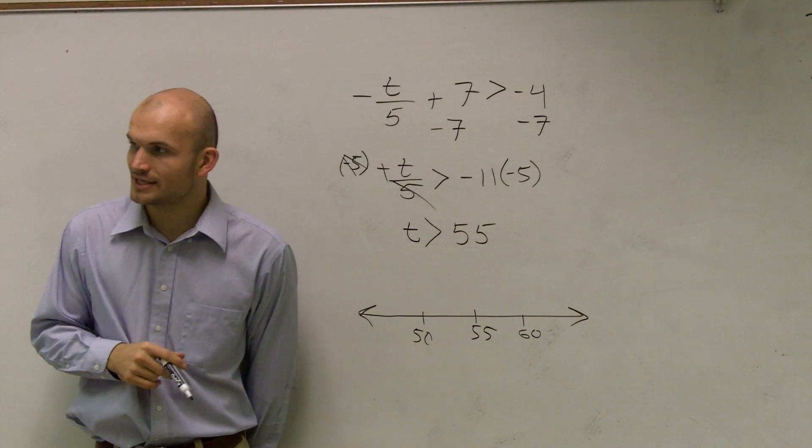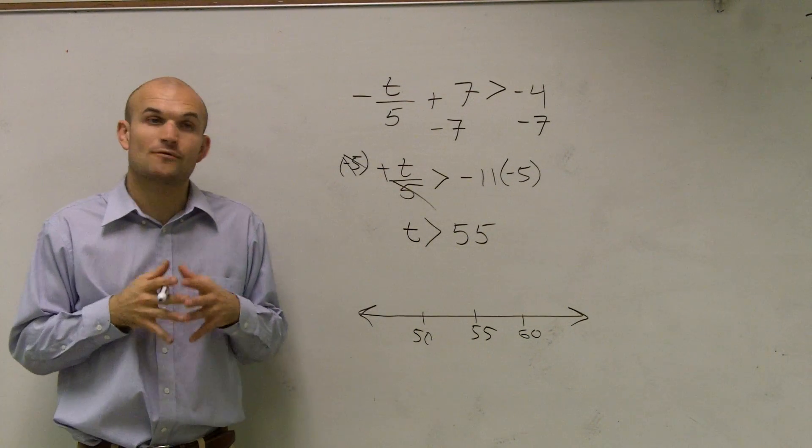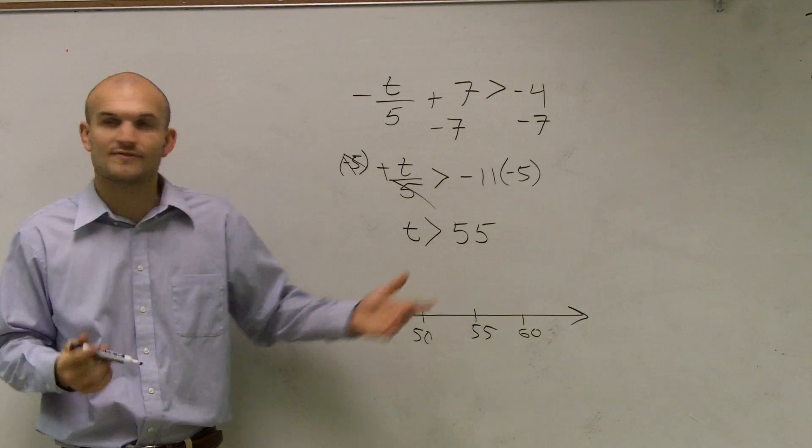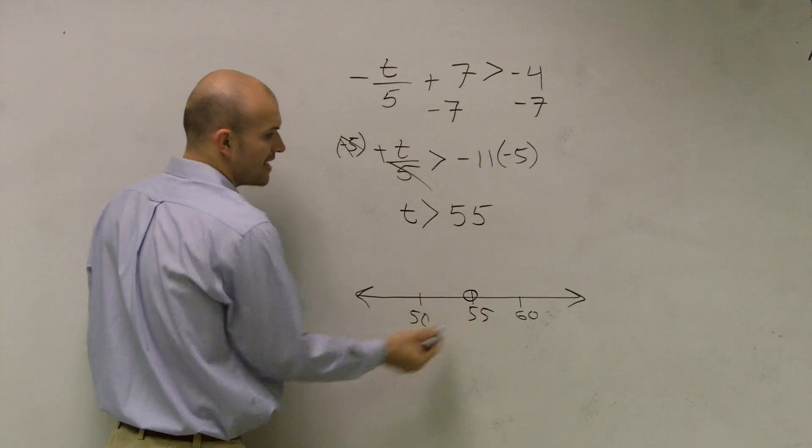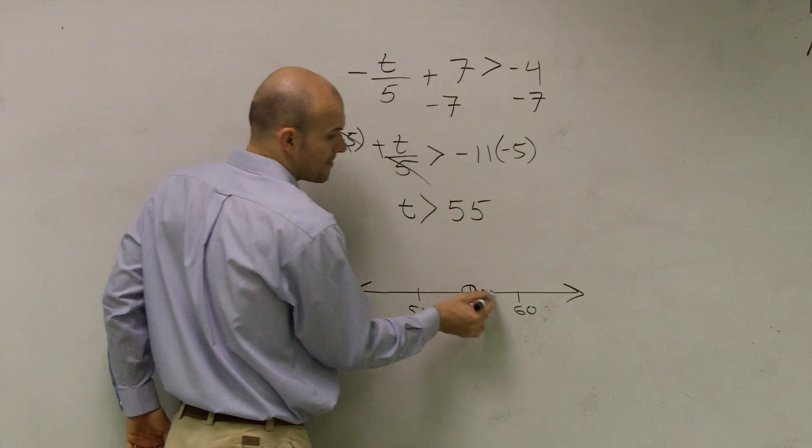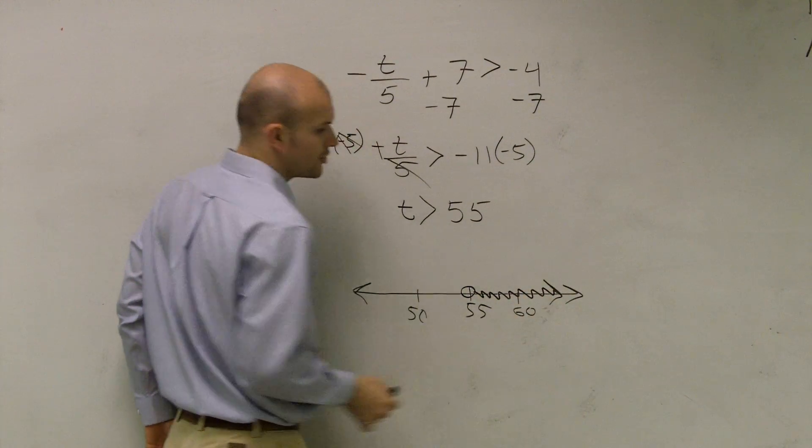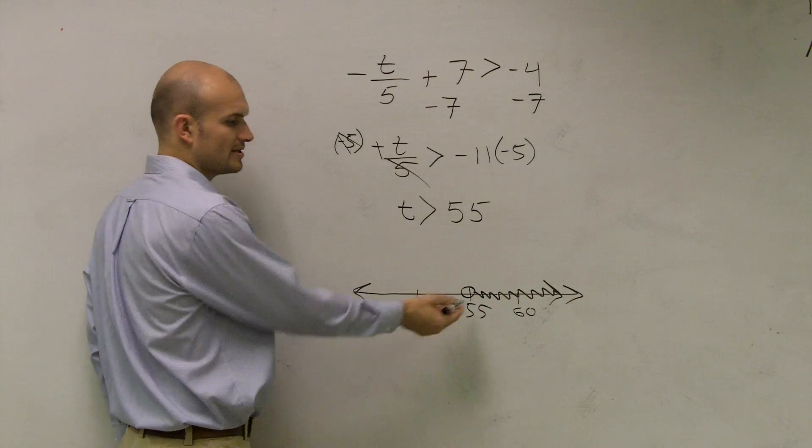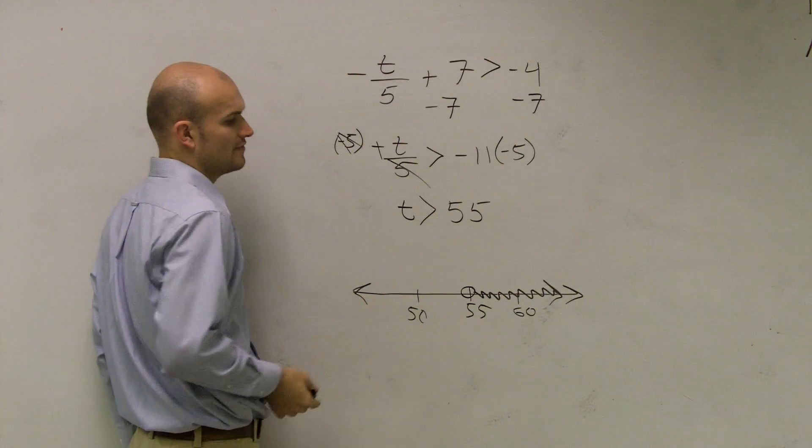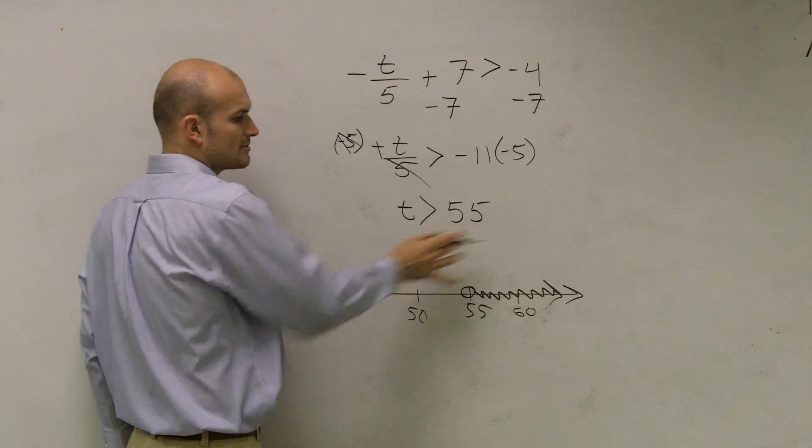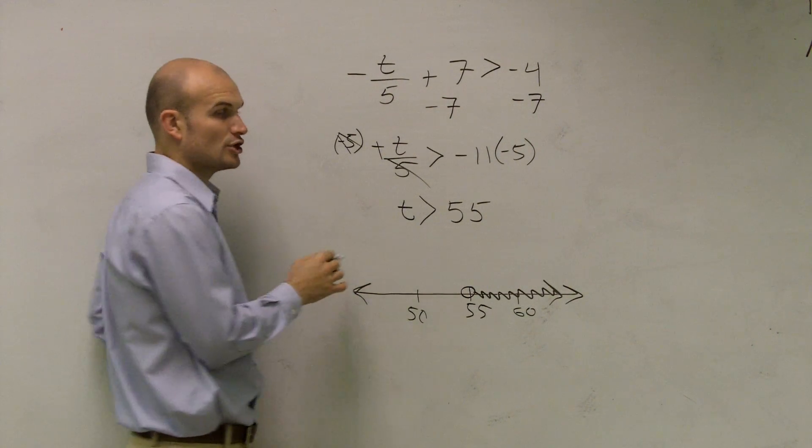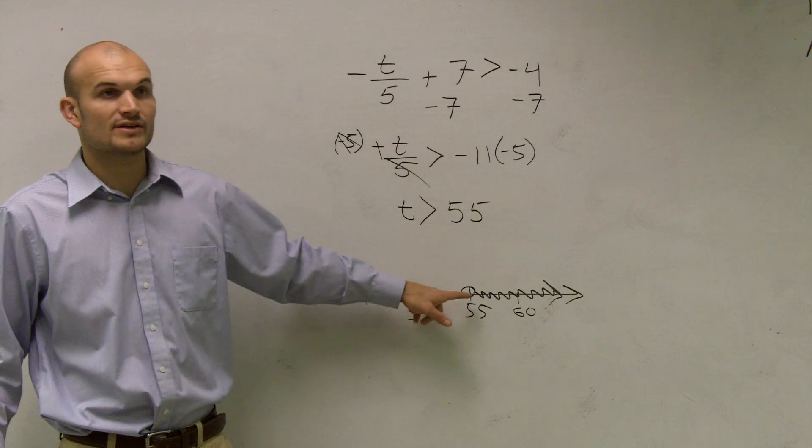And when you go ahead and take a look at this, you say, alright, greater than 55. What are all the numbers that are greater than 55? Well, if I make a circle at 55, all the numbers that are greater than 55 are going right in that direction. Because 50 is less than 55. So you're going to have all your numbers going in there. And since it's not greater than or equal to, we're going to leave our dot as an open dot.